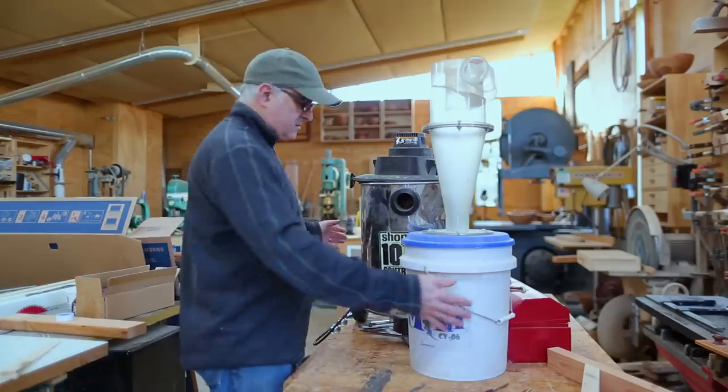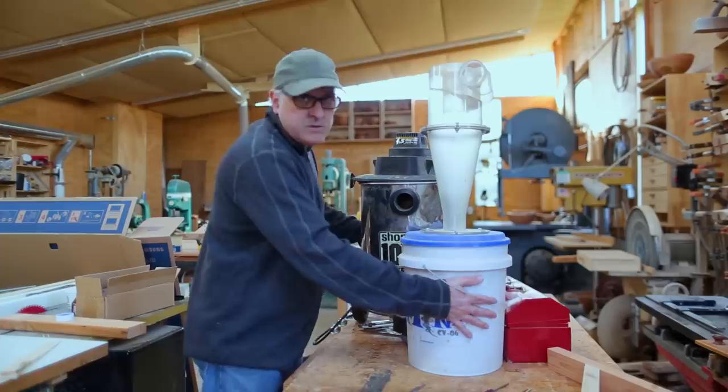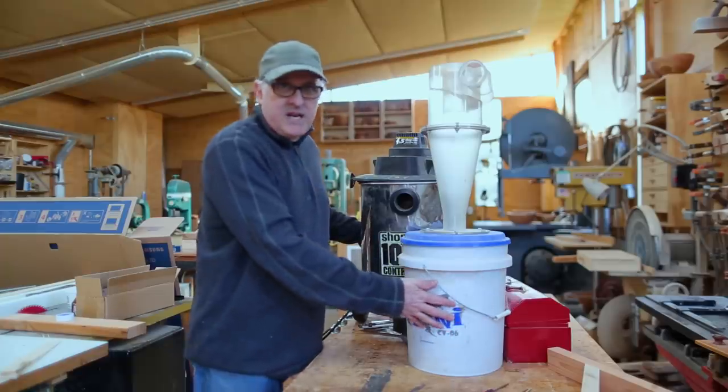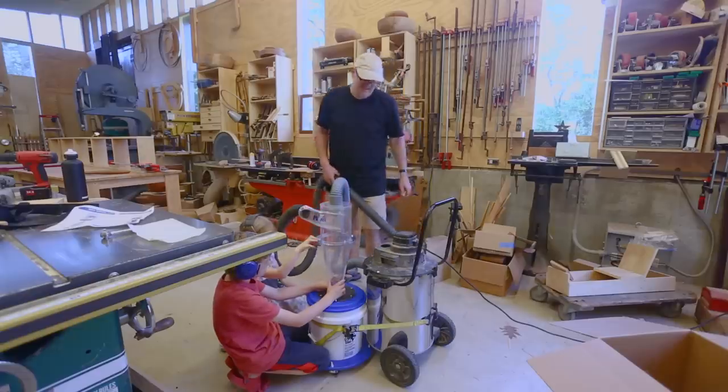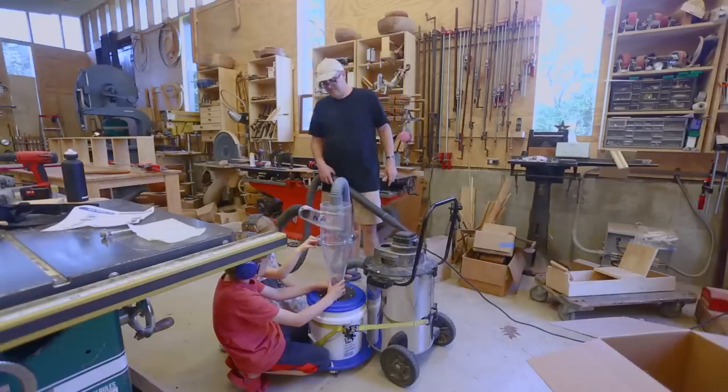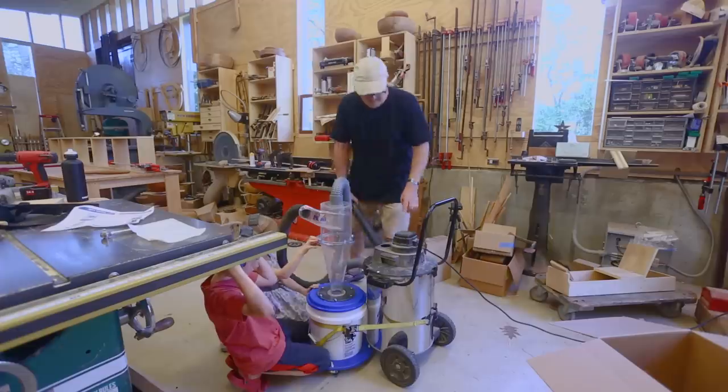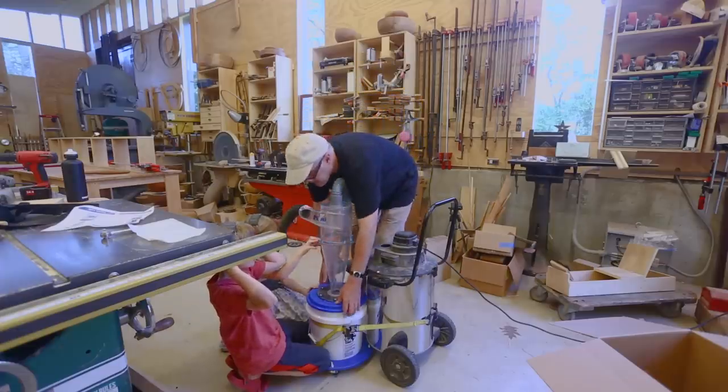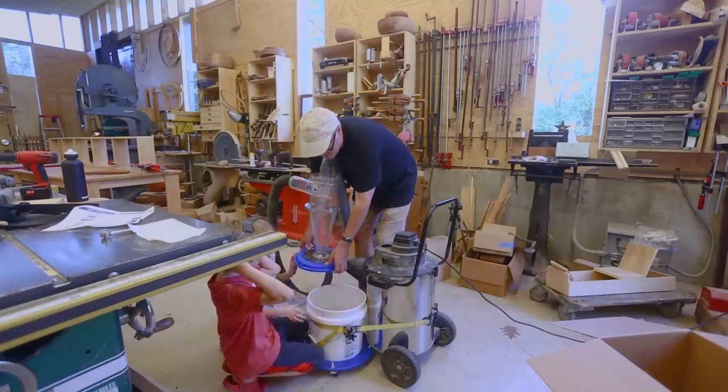And the way this works, or the way it's supposed to work, is you sort of strap the two tanks together and you run hoses between the two. And then this helps get a lot of the material out of the vacuum stream before it gets to the filter in the vacuum.